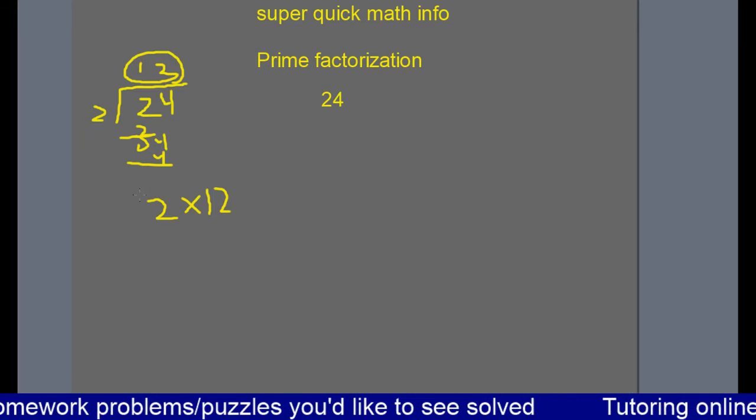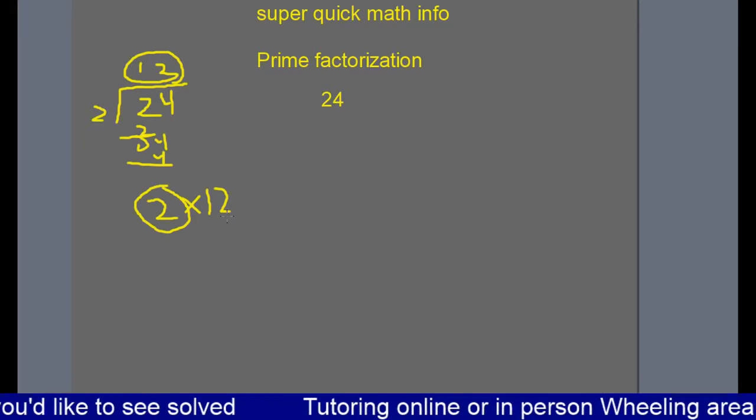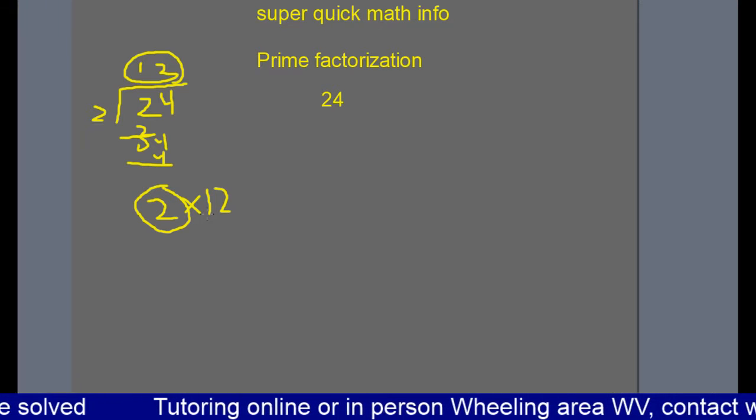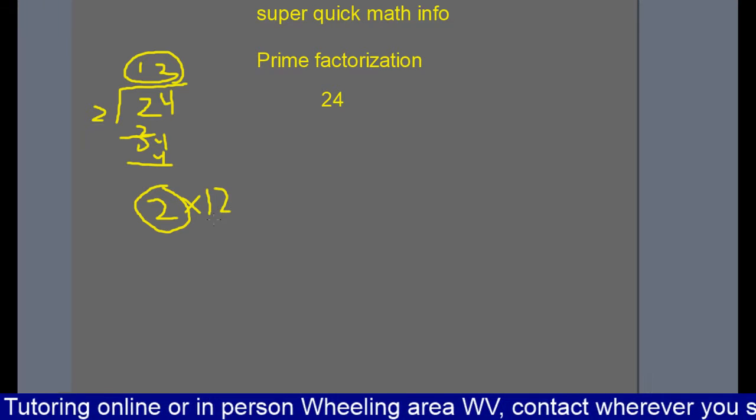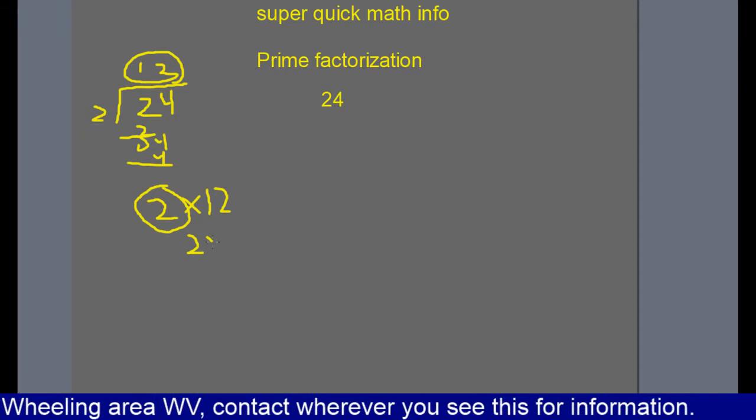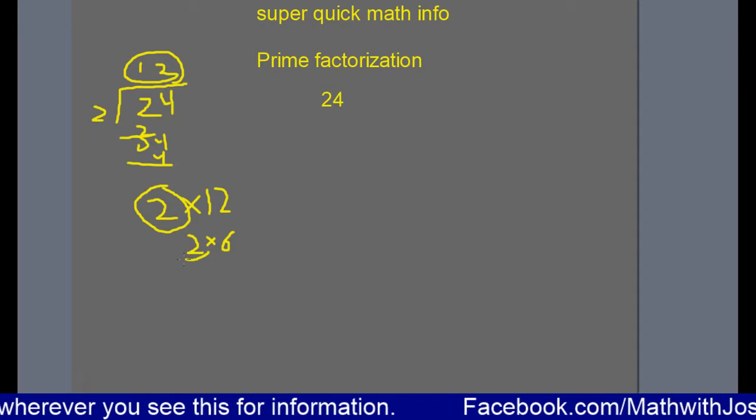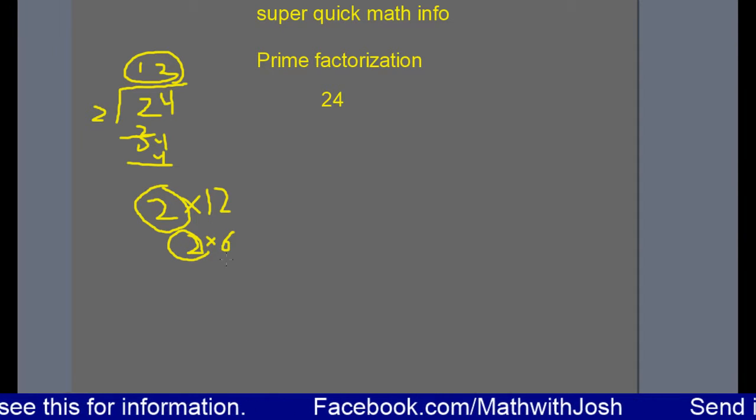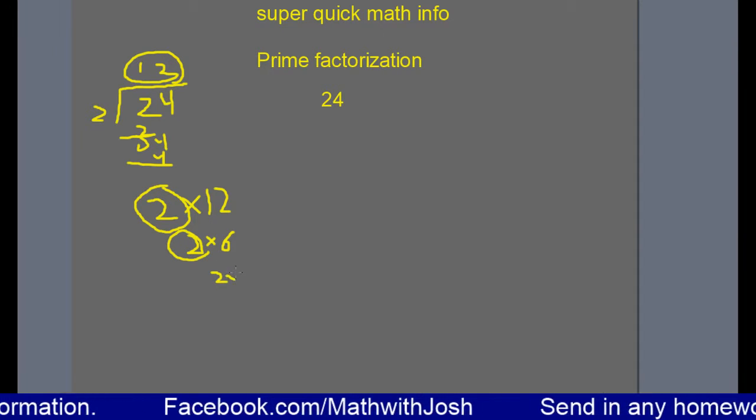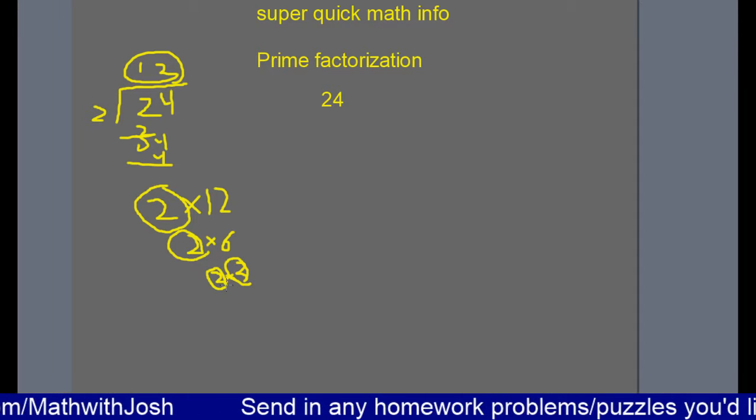Now after you break it down, if either of the factors is prime, you circle it and then break down the other factor in the same way. So 12 now becomes—I realize that 12 is 2 times 6. You have to find a multiplication problem in any case. 2 is again a prime, and 6 we realize is 2 times 3. 2 and 3 are prime, so we can circle them.